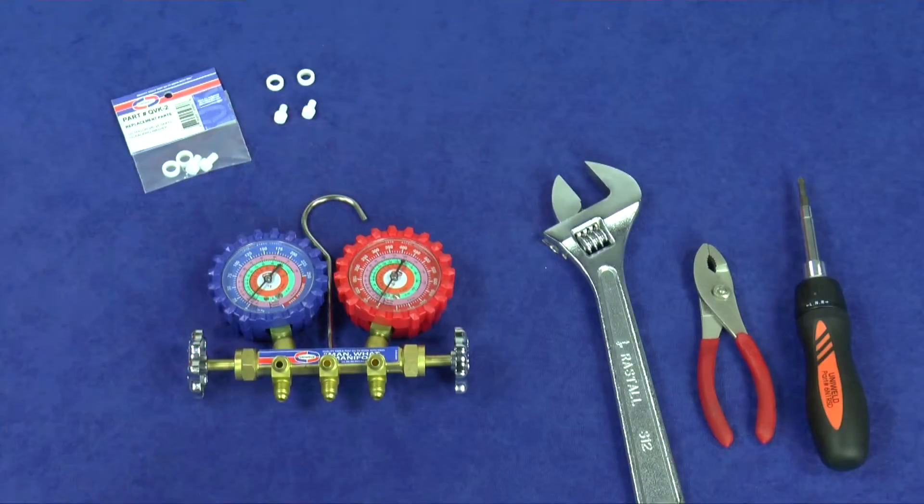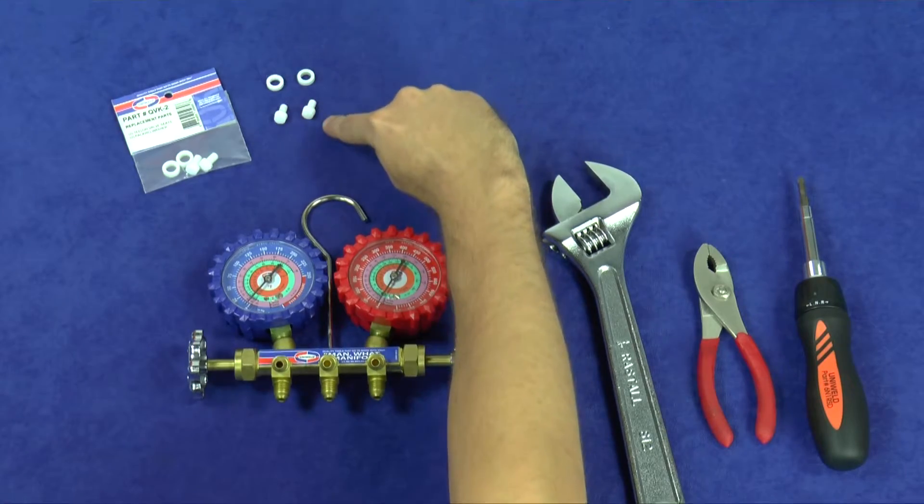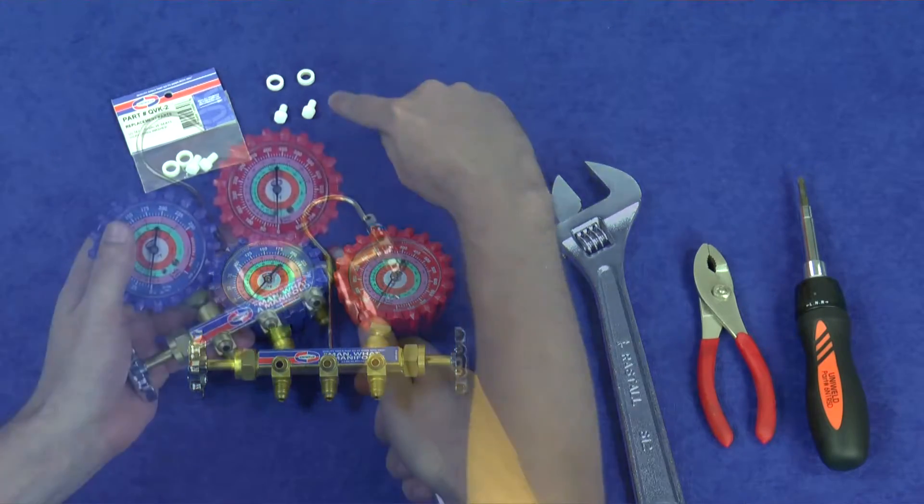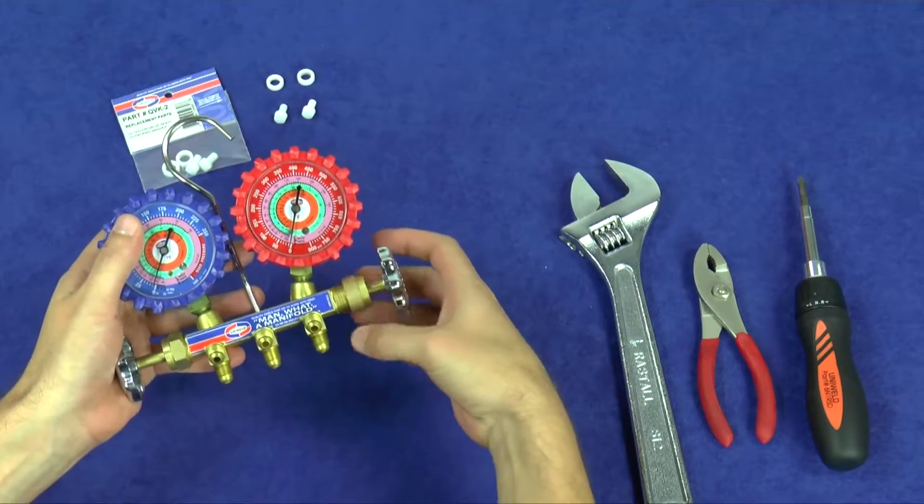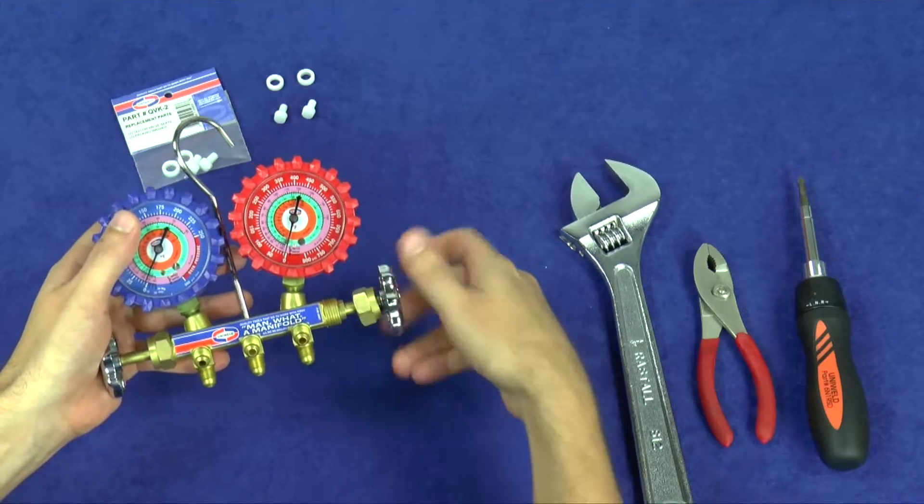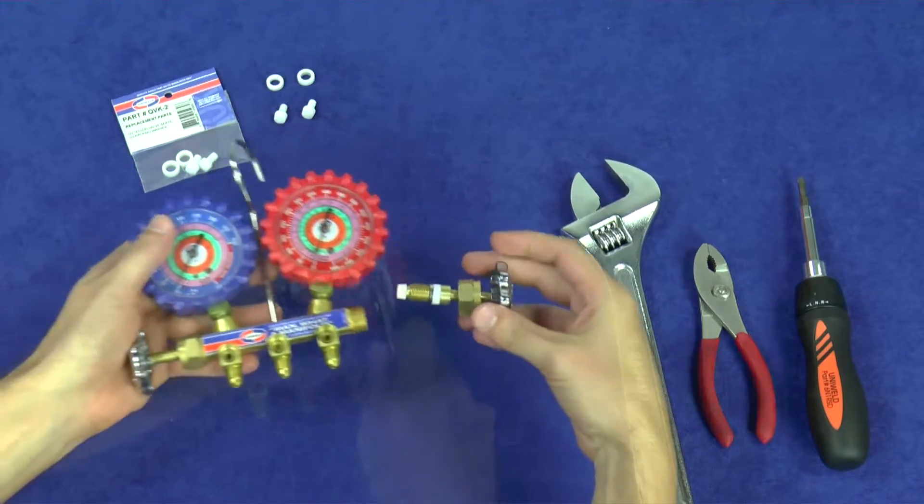The second option, the QVK2 rebuild kit, includes two Teflon washers and two Teflon valve seats, allowing you to rebuild both the high and low side valve stem assemblies. First, unscrew the brass packing nut and remove the valve stem assembly from the manifold body by turning the metal hand wheel counterclockwise.